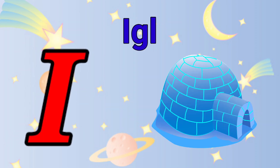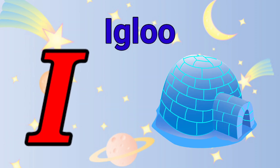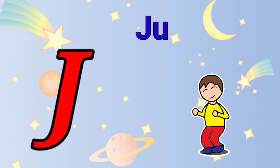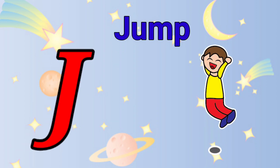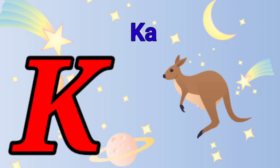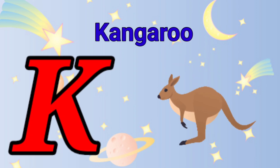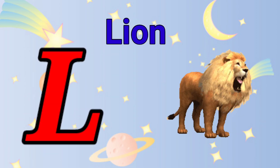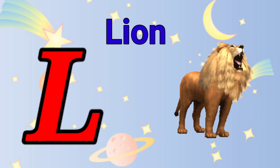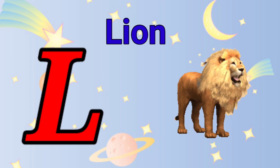I is for igloo, i-i-igloo. J is for jump, j-j-jump. K is for kangaroo, k-k-kangaroo. L is for lion, l-l-lion.